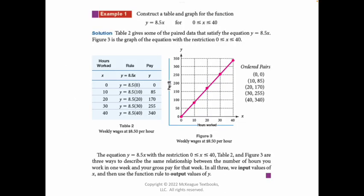We're going to look at the first example: construct a table and a graph for the function. The rule tells me what to do with the input to get the output — what do I do with x to get y? In this case, I need to multiply by 8.5. The numerical version is your list of inputs and outputs and how they're matched up — your x, y coordinates. And then this is your graphical representation.